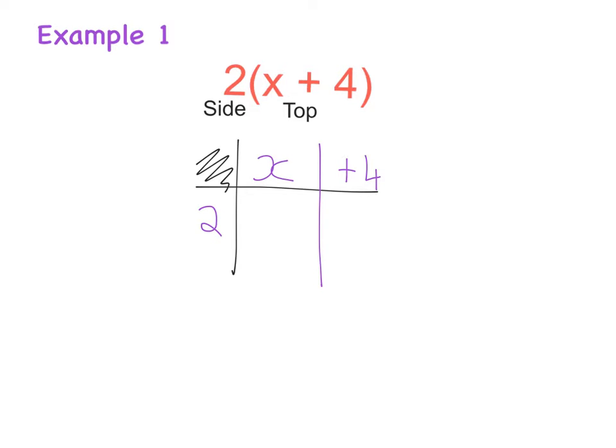We multiply accordingly: 2 multiplied by x gives me 2x, and 2 multiplied by plus 4 gives me plus 8. So my answer to this one here is 2x plus 8.